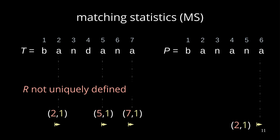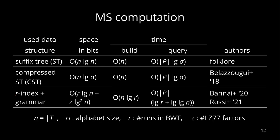Matching statistics is not a new concept; there are already algorithms computing it. One of them, which is a textbook algorithm, uses the suffix tree, takes O(n log n) bits of space. It can be built in linear time, and the query is bounded by the pattern length times log sigma, where sigma is the alphabet size and n is the length of the text.